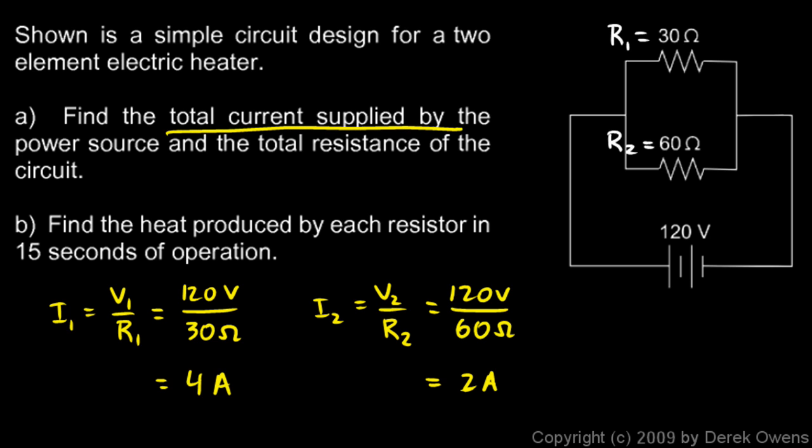Then the total current supplied by the power source, that's what we're trying to find here, has to be the sum of these two: 4 plus 2 is 6 amps.